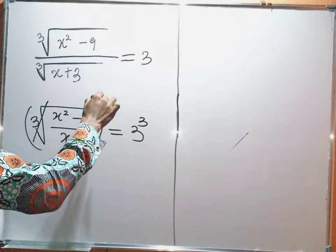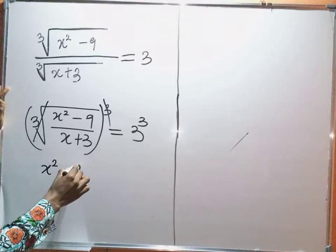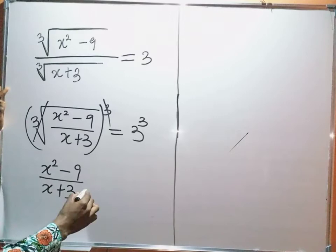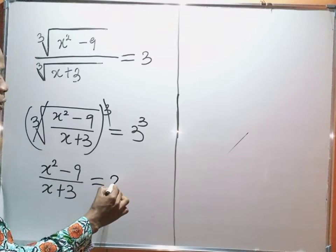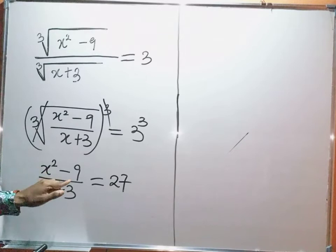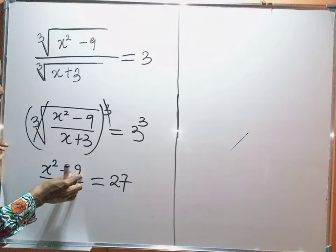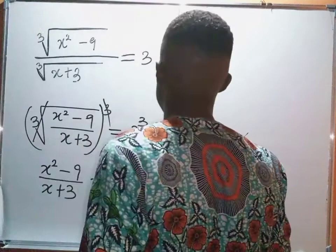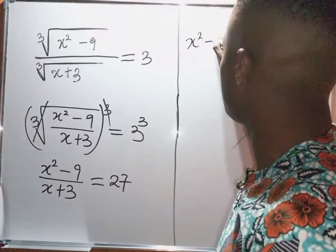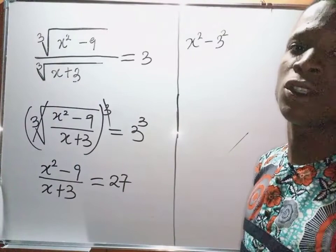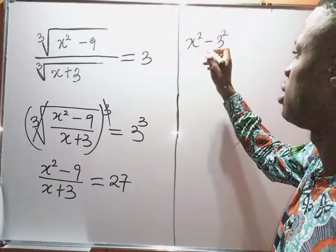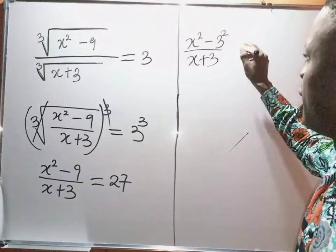Then I'm left with x squared minus 9 divided by x plus 3, and it's equal to 3 raised to the power of 3, which is 27. So now I have x squared minus 9 divided by x plus 3 equal to 27. Note that 9 is the same thing as 3 raised to the power of 2, because 3 squared is 3 times 3, which is 9. So I replace my 9 with 3 squared: x squared minus 3 squared, divided by x plus 3, equals 27.